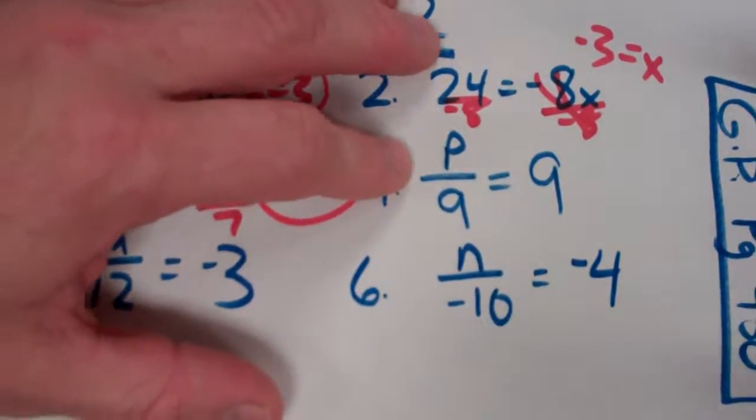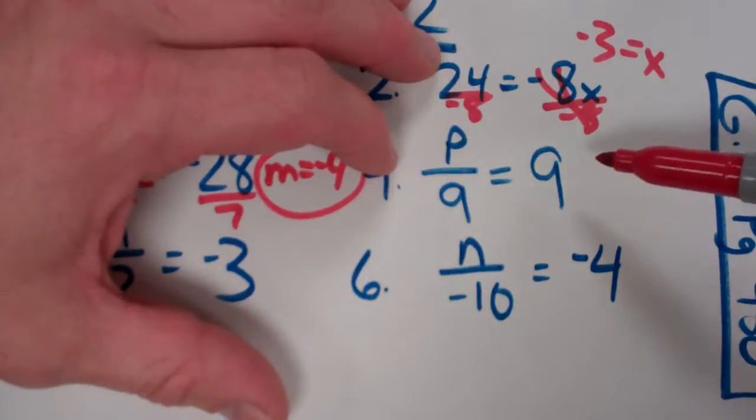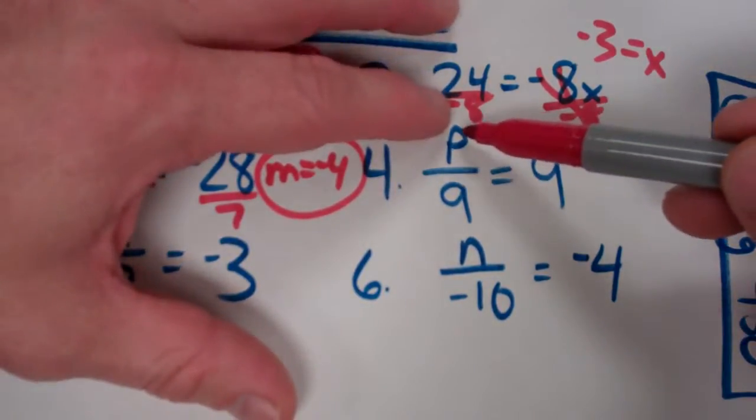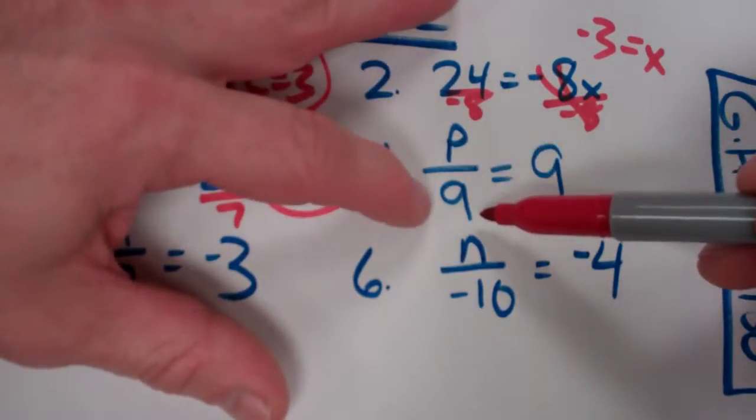This is the one that most people will miss. They'll see this p divided by 9 equals 9. And they'll think the answer is 1. But look, if you put a 1 there, 1 divided by 9 is not 9. 1 divided by 9 is 1 ninth.